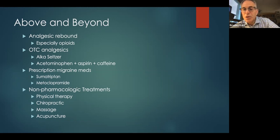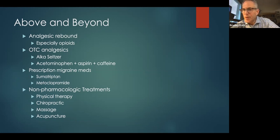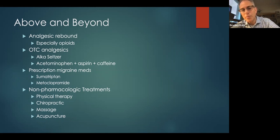You can use Excedrin Migraine, which is a combination of Tylenol, aspirin, and caffeine — there's usually a generic available everywhere. You can get into rebound with these as well, so warn people not to use them more than about 10 to 12 times a month.